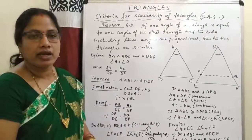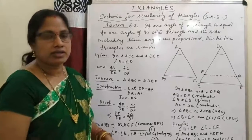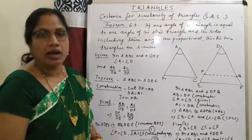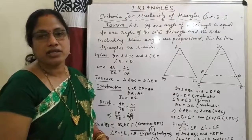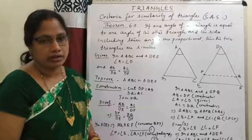In this way, we can prove the three criteria of similarity of triangles: that is the Angle-Angle-Angle criteria, the Side-Angle-Side criteria, and the Side-Side-Side criteria of two triangles.